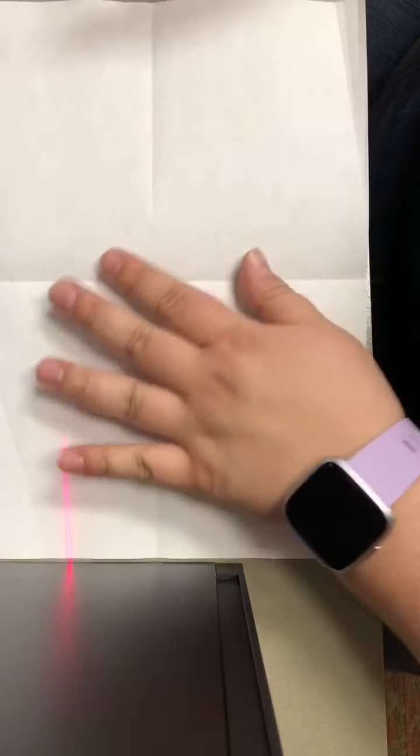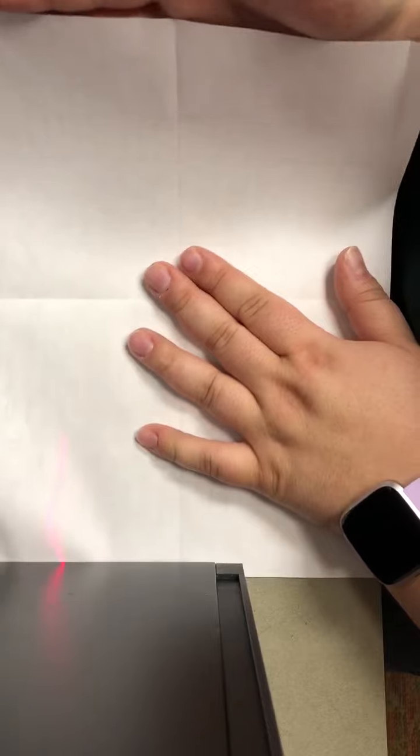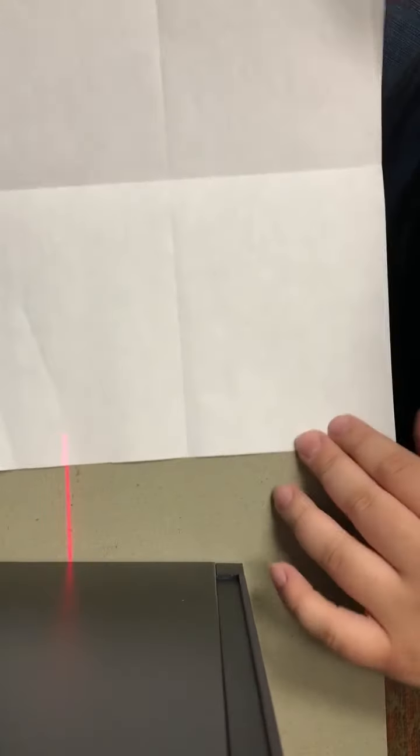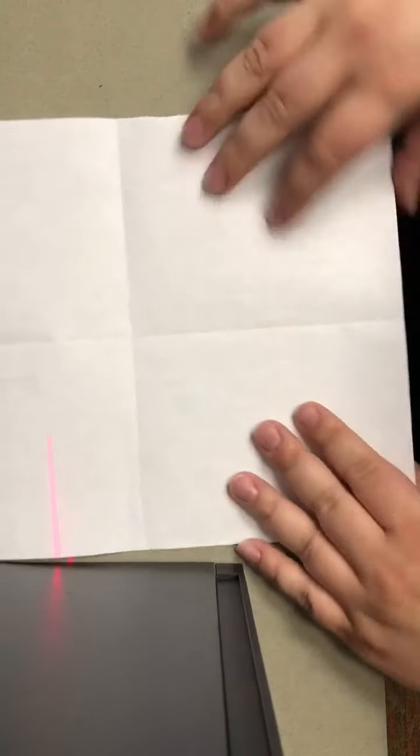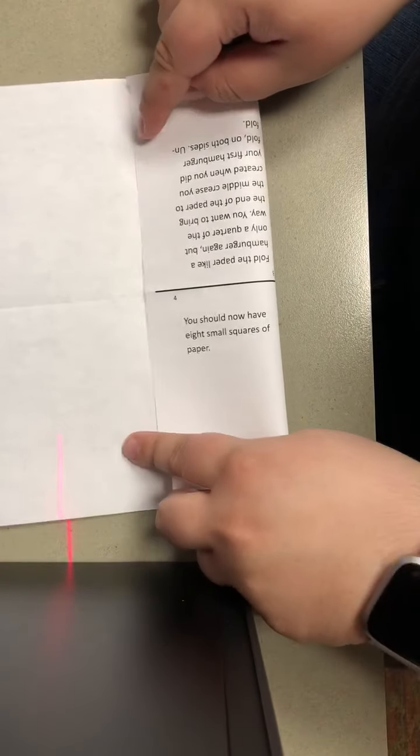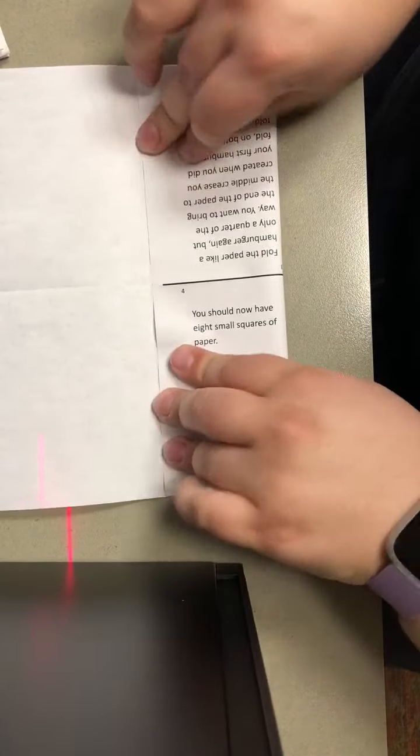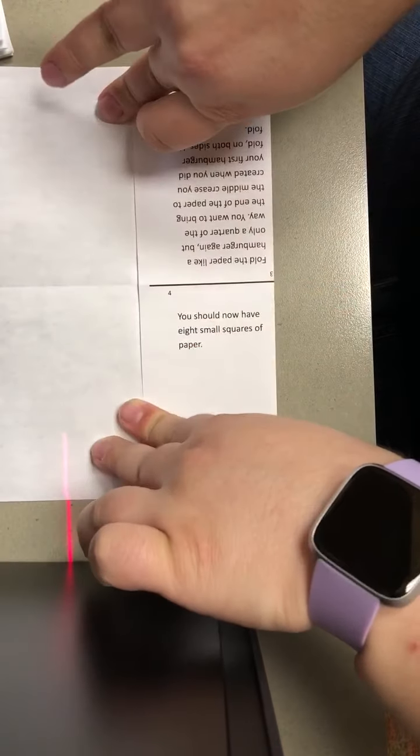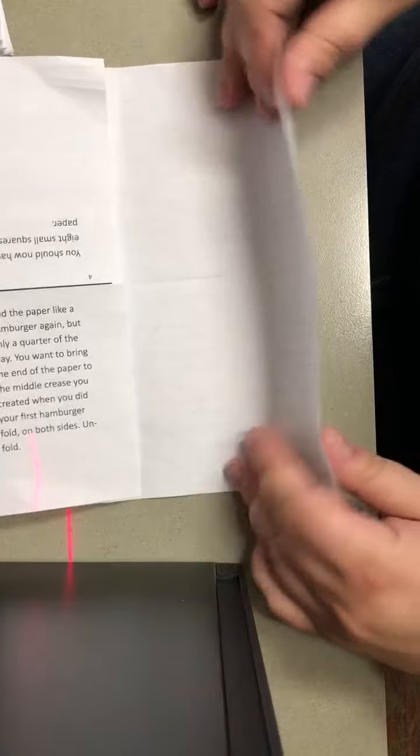The next thing you're going to do is flip this over and you're going to fold it a quarter of the way. So this is half, right? A quarter is taking this and going up to that half mark. You're going to then flip it around and do it again.